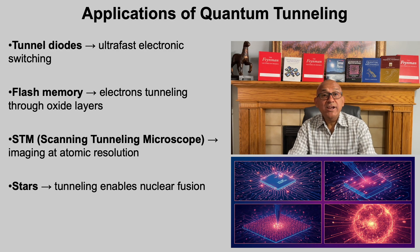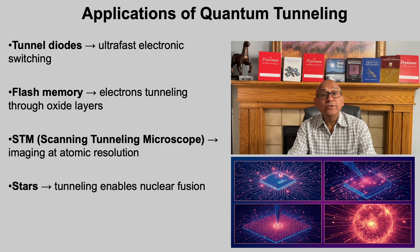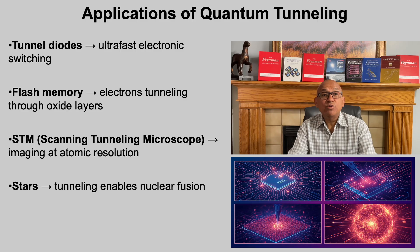Quantum tunneling is not just a strange prediction of quantum mechanics — it powers technologies and even stars. In tunnel diodes, tunneling allows ultra-fast electronic switching beyond what classical devices can achieve. In flash memory, electrons tunnel through thin oxide barriers, making non-volatile data storage possible. The scanning tunneling microscope uses tunneling currents to map out surfaces atom by atom, giving us direct images of matter at the nanoscale. And in nature, tunneling makes nuclear fusion in stars possible — protons do not have enough energy to overcome their mutual repulsion classically, but tunneling allows them to fuse, fueling the sun and every star in the universe.